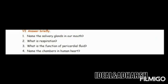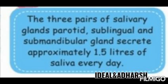Name the salivary glands in your mouth. We already saw and discussed this. The three types of salivary glands are: parotid glands, sublingual glands, and submandibular glands. Together they secrete approximately 1.5 liters of saliva every day.